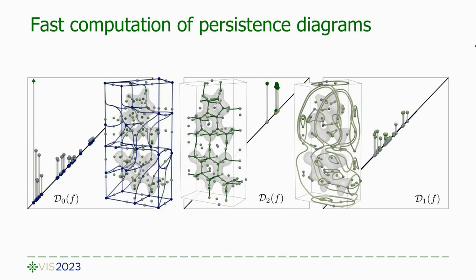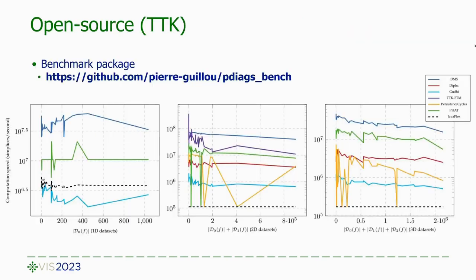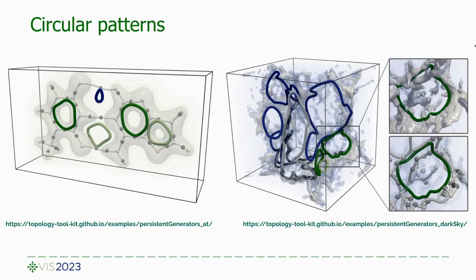This work presents a fast algorithm for the computation of persistence diagrams. Our algorithm can be viewed as a modern interpretation of the standard persistence algorithm from the perspective of discrete Morse theory. We provide an open-source implementation as well as a benchmark package which shows that our method leads to faster computations than competing approaches. Our work enables the interactive inspection of topological patterns in scalar data.